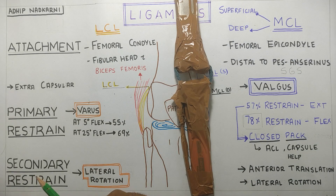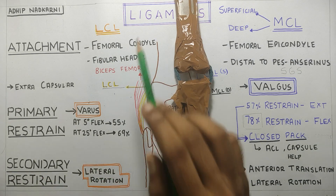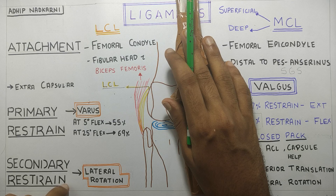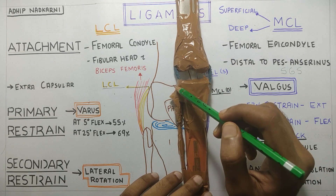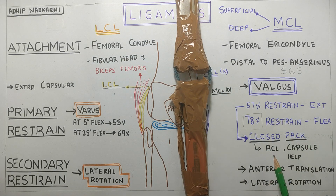The secondary restraint provided by the lateral collateral ligament is lateral rotation, which is the same as the MCL.